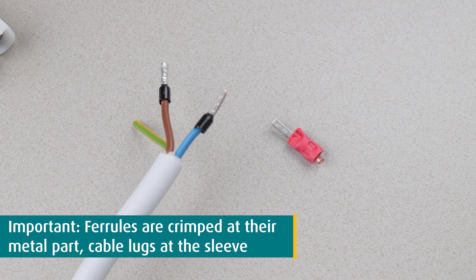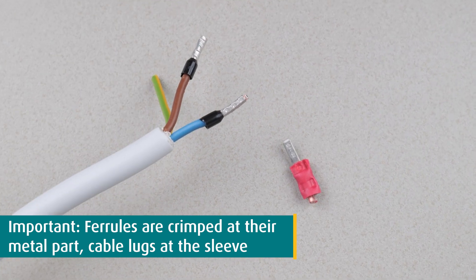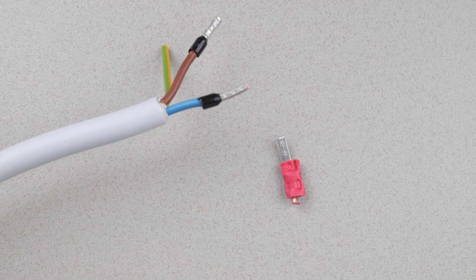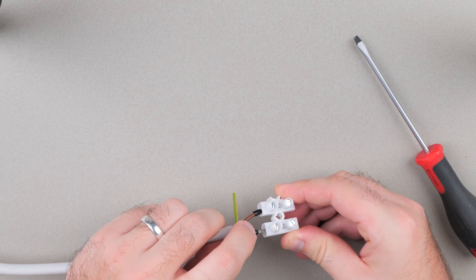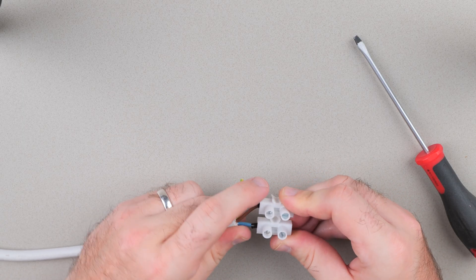It's important to note that ferrules are crimped at the metal part while cable lugs are crimped at the insulation sleeve. That's it, the cable's end can now be connected to a terminal.